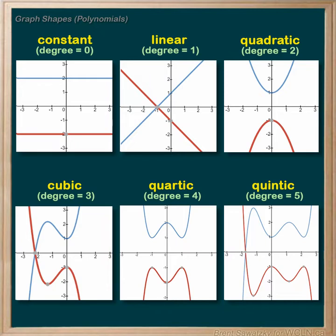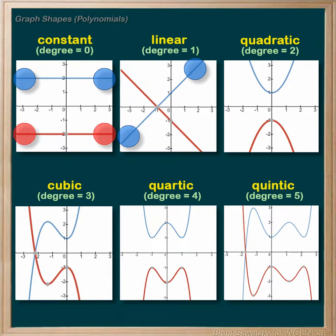So let's stop there and observe some of the trends in these graphs. Let's start by recognizing where these graphs begin and end. For a degree of zero — the constant — the positive starts in the top left and ends in the top right. The negative starts in the bottom left and ends in the bottom right. For a degree of one, the positive starts in the bottom left and ends in the top right.